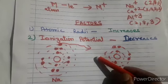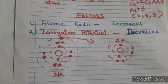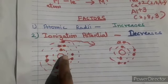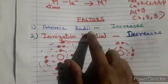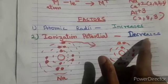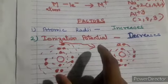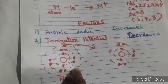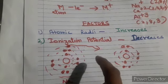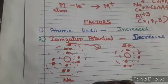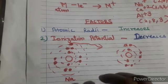More the atomic size, lower will be your ionization potential. Once a particular atom has low ionization potential, its tendency to lose electrons also increases. More atomic size → less ionization potential → greater tendency to lose electrons. Because of these two factors, metals are good reducing agents. They have a greater tendency to lose electrons, and because of that they can easily form cations.